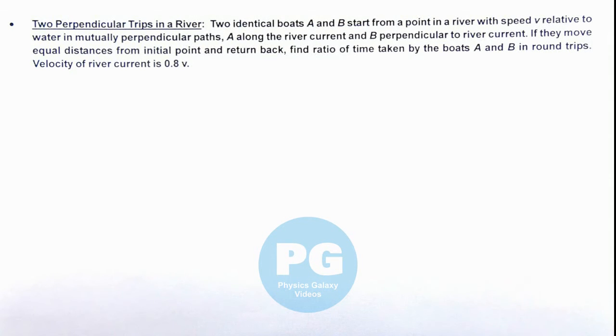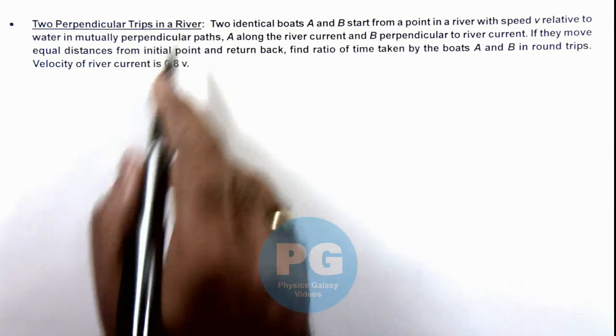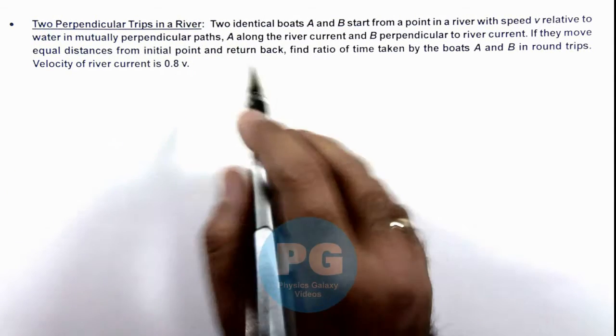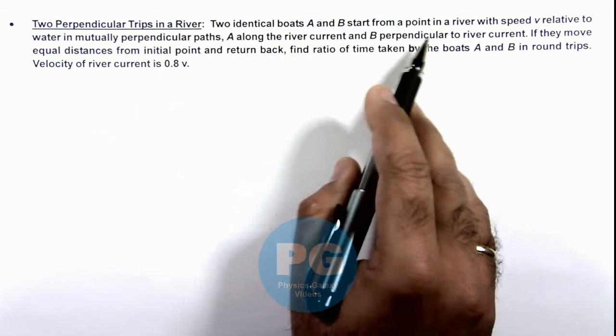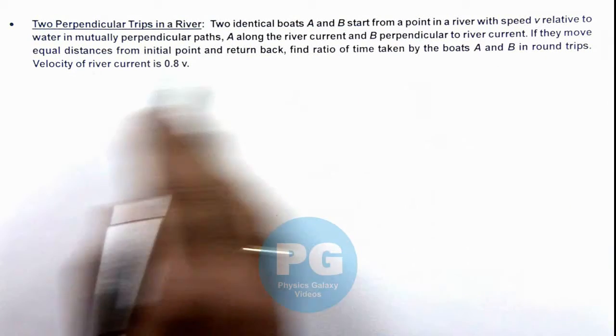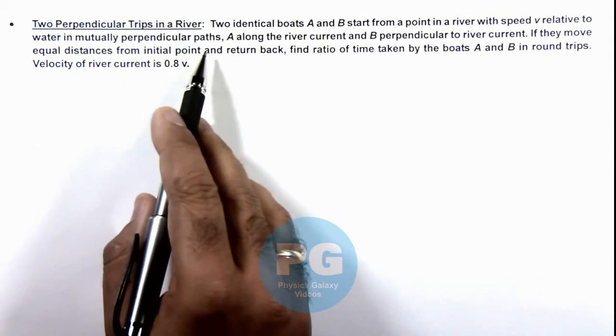This illustration is analyzing two perpendicular trips in a river. We are given that two identical boats A and B start from a point in a river with speed v relative to water in mutually perpendicular paths.